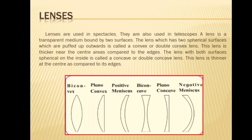Different types of lenses are shown in the diagram. A ray of light gets refracted twice while passing through a lens — once while entering the lens and once while emerging from the lens. The direction of the ray changes because of these refractions.